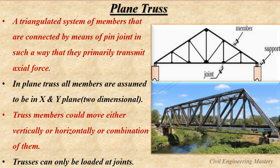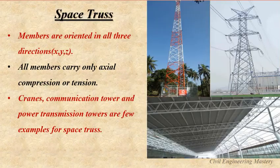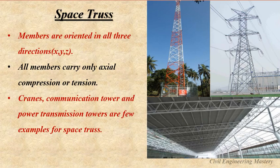Plane trusses can be used in railway stations, railway bridges and factories. The next one is the space truss. It is the three-dimensional structural form and members are oriented in all three directions. Communication towers, power transmission towers and cranes are a few examples for space truss. Similar to the plane truss, all the members in the space truss also carry only axial force.